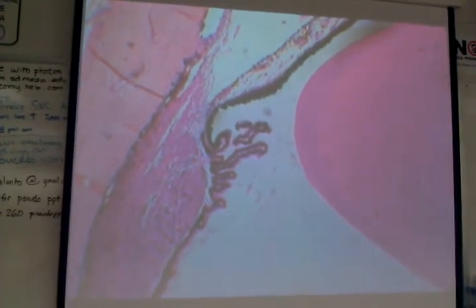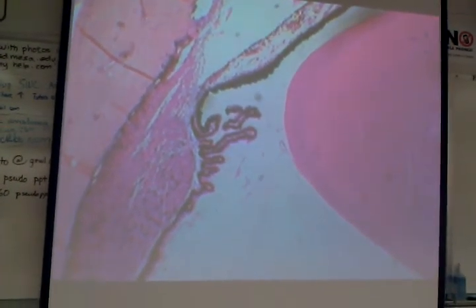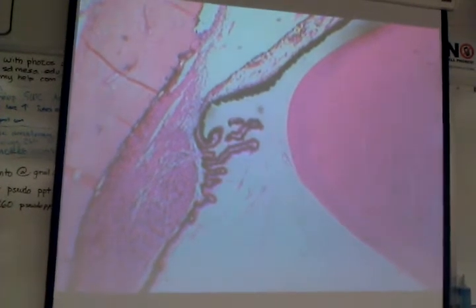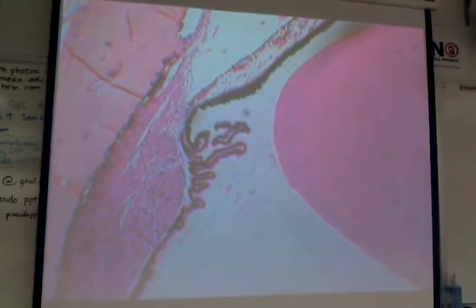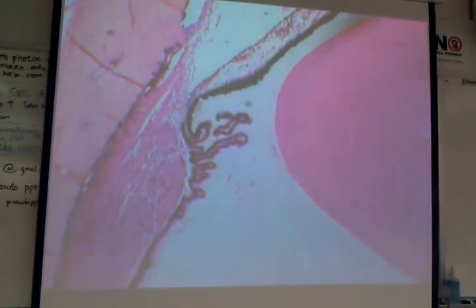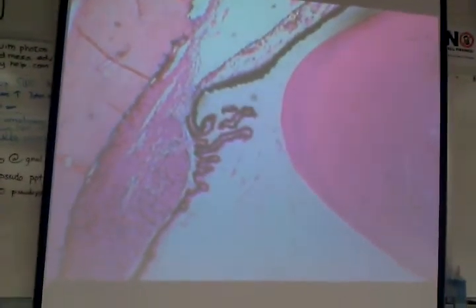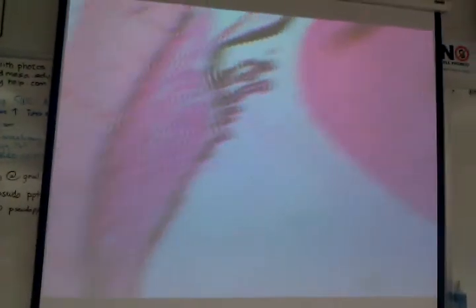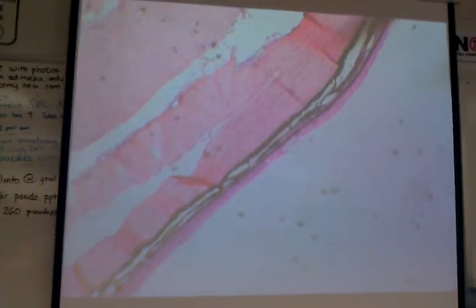This is the ciliary body. And these little guys kind of right here, they're actually called the ciliary processes, and what's attached to them are the little ligaments that you can't see. So iris, ciliary body. Remember the ciliary body is the anterior projection of what's called the vascular tunic. So let's look at this under higher magnification.